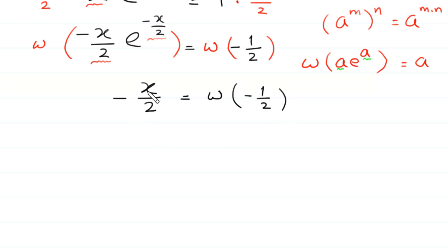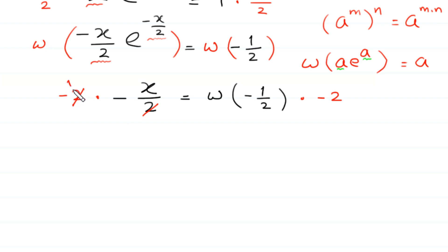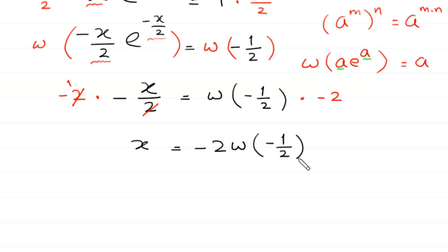Now, to find the value of x, we multiply both sides of this equation by negative 2. The 2 cancels on the left, and negative 1 times negative x becomes positive x. So x is equal to negative 2 times W of negative 1 over 2. This is the value of x and this is the final answer.